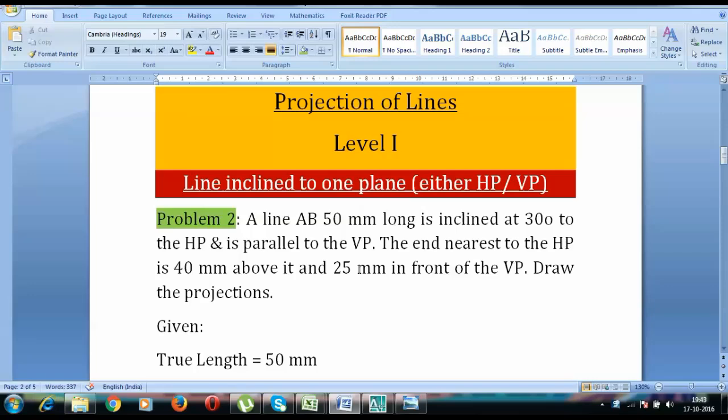A line AB 50mm long is inclined at 30 degrees to the HP and is parallel to the VP. The nearest end to the HP is 40mm above it and 25mm in front of the VP. Draw the projections.